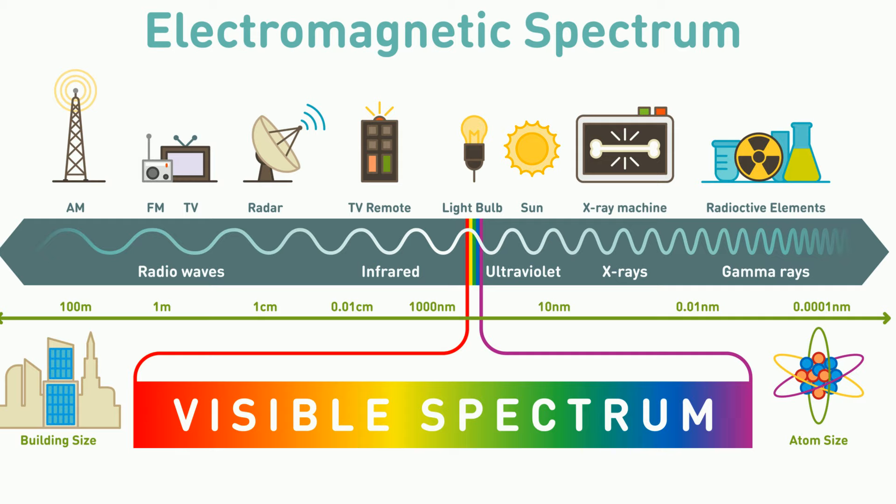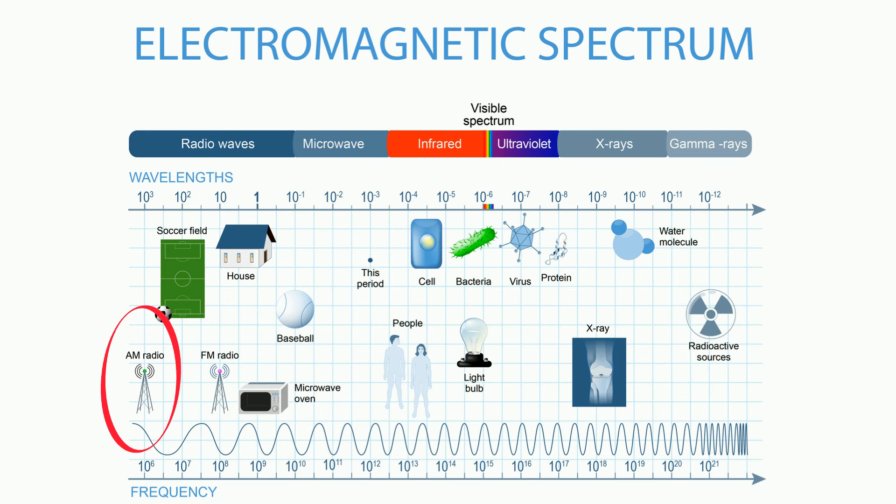Let's take a look at the electromagnetic spectrum. Radio waves have a very low frequency, and they have a wavelength roughly the size of a soccer field. Moving to the right are microwaves, and they have wavelengths roughly the size of a baseball.